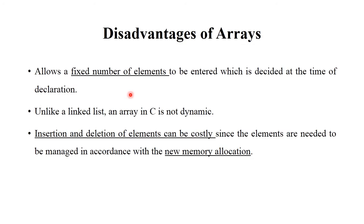Disadvantages of array: The main disadvantage is that it allows only a fixed or constant number of elements, which is decided at the time of declaration. These disadvantages are overcome in linked list, tree, or graph — these types of data structures are flexible and dynamic. Arrays are fixed and constant. Insertion and deletion of elements can be costly, since elements need to be managed according to new memory locations.